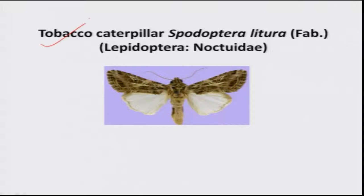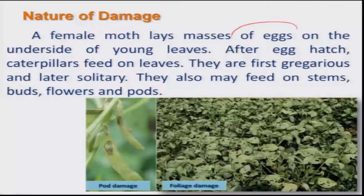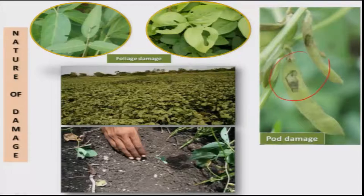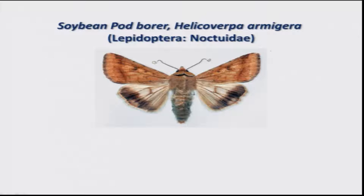The next important pest is tobacco caterpillar, Spodoptera litura, which is a polyphagous pest. Larvae is the damaging stage. It lays eggs in masses on the under surface of the leaf, and immediately after hatching the larvae unitedly scrape the chlorophyll content from the leaf. In later stages, we find total defoliation of soybean, and damage to pods is also seen.